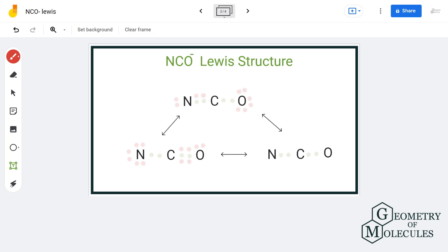For the next resonance structure, we will put two electron pair in between the atoms to assign and assign two electrons pair to each nitrogen and oxygen atom.